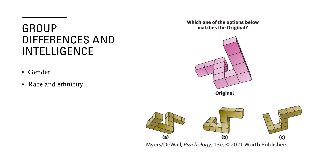Men are also better at spatial tasks like the one on this slide. When it comes to race and ethnicity, racial and ethnic groups differ in their average intelligence test scores. Those who score high are more likely to attain high levels of education and income. However, any differences in intelligence related to race and ethnicity are likely due to environmental influences, not biological ones. For example, the schools we attend influence our intelligence, and countries with large wealth gaps tend to also have large rich-versus-poor intelligence test score gaps.